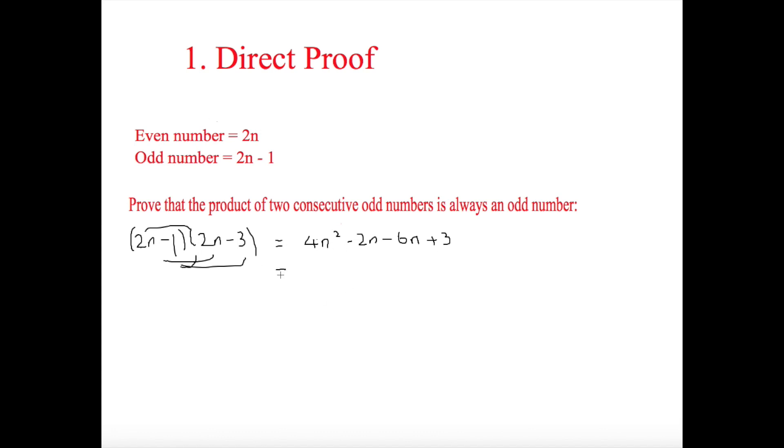Now this can then be simplified to make 4n squared minus 8n plus 3.